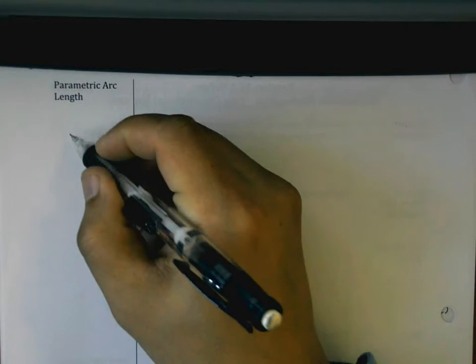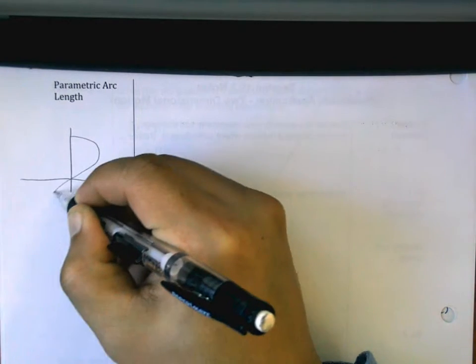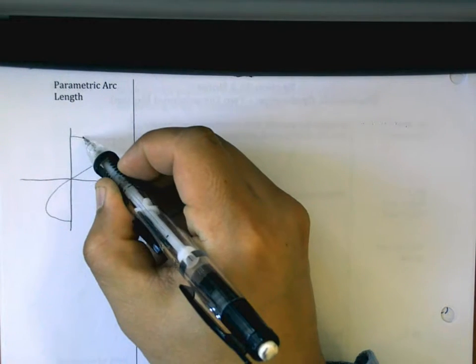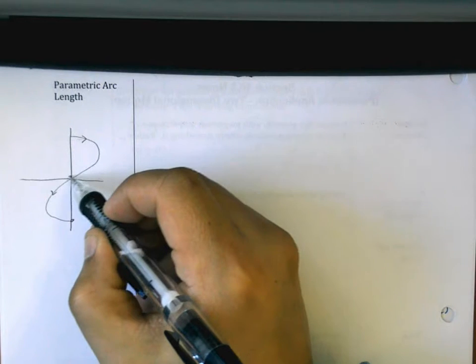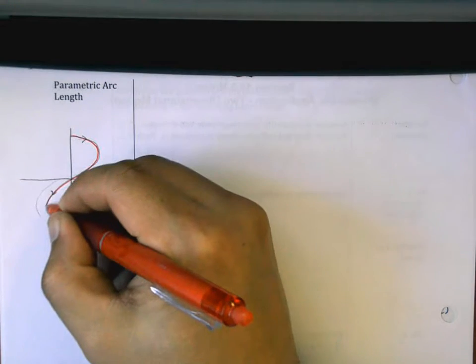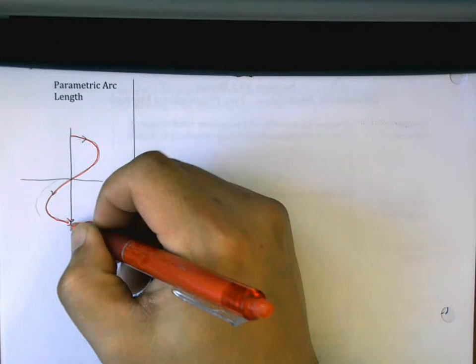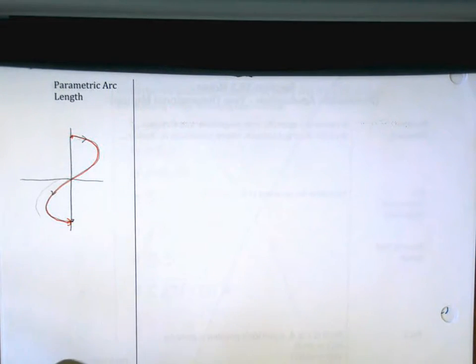So keep in mind that let's say we have some arc length or some graph here that looks maybe something like this. And we want to know what is the distance traveled along this arc right here. Let me highlight it here. What is the distance traveled along this arc, from the start here to the end of that curve?